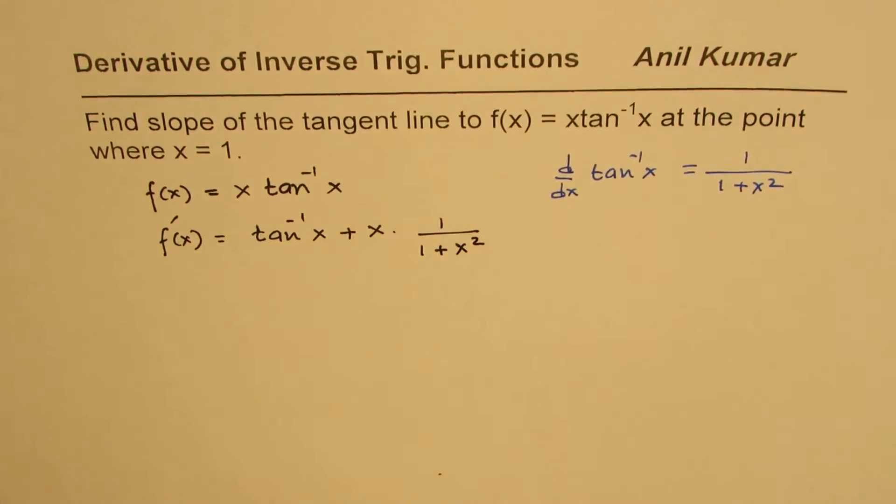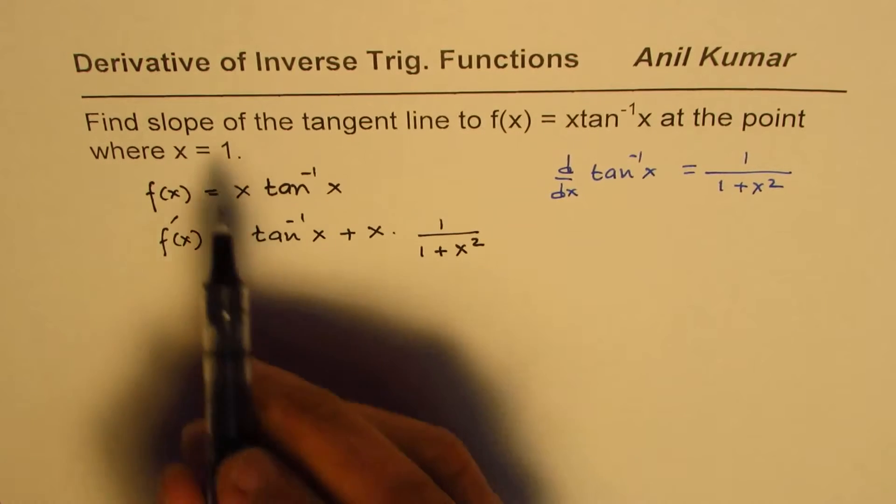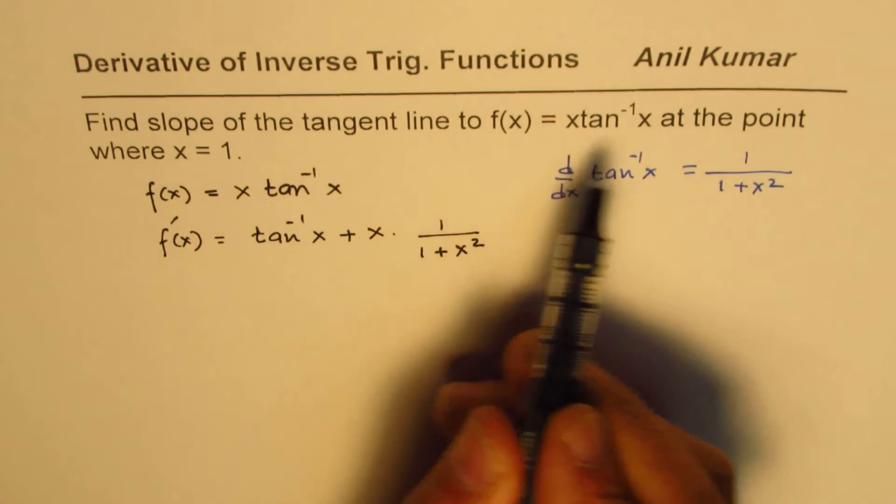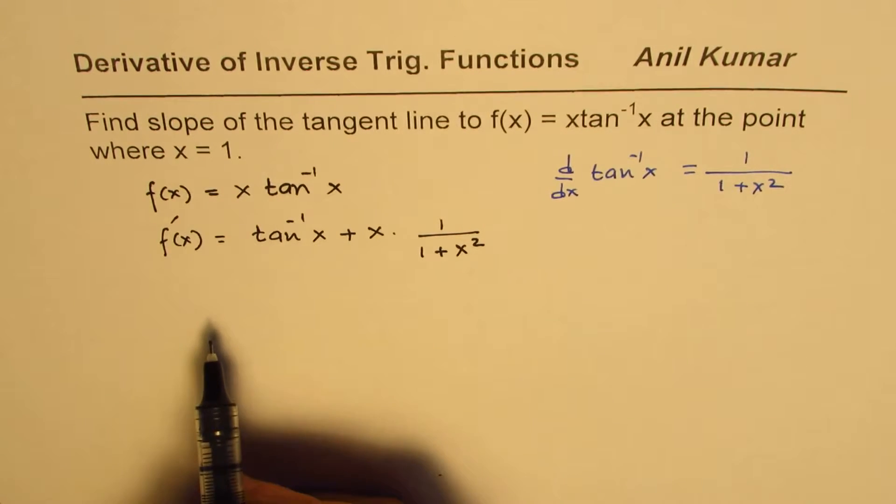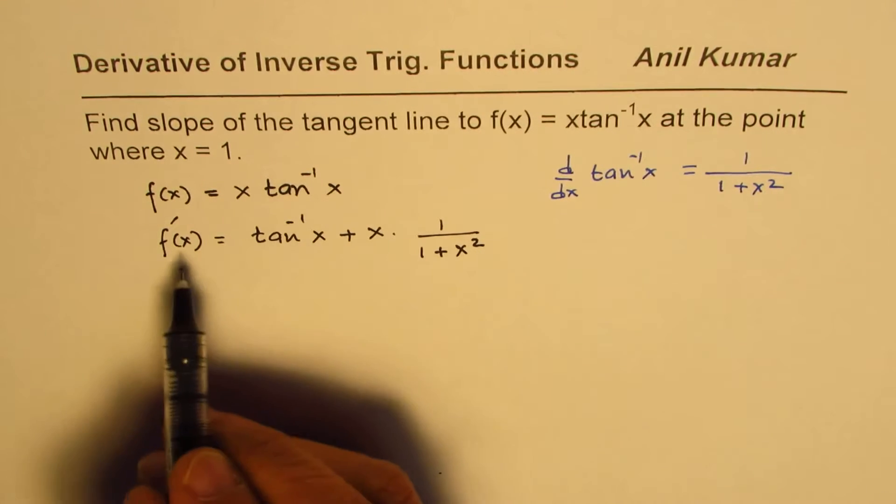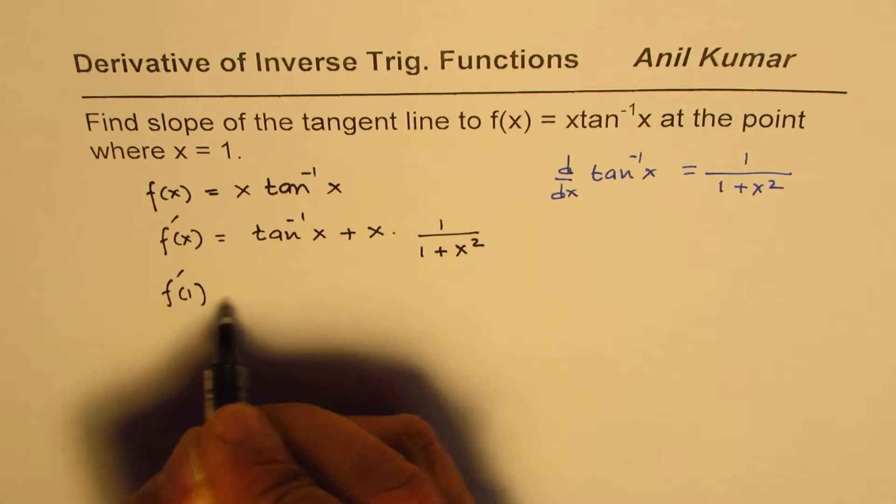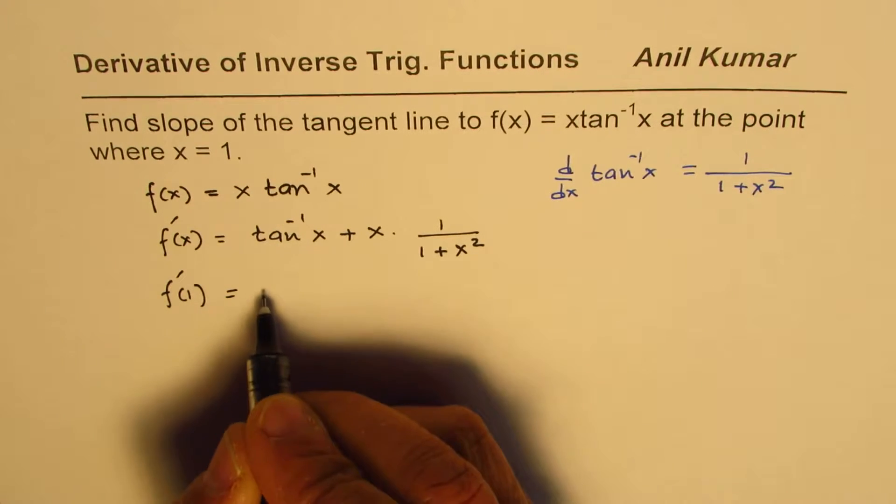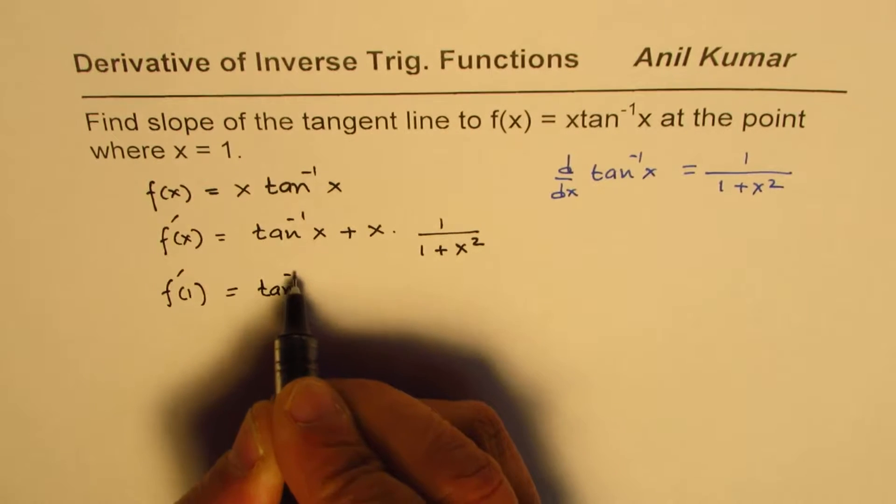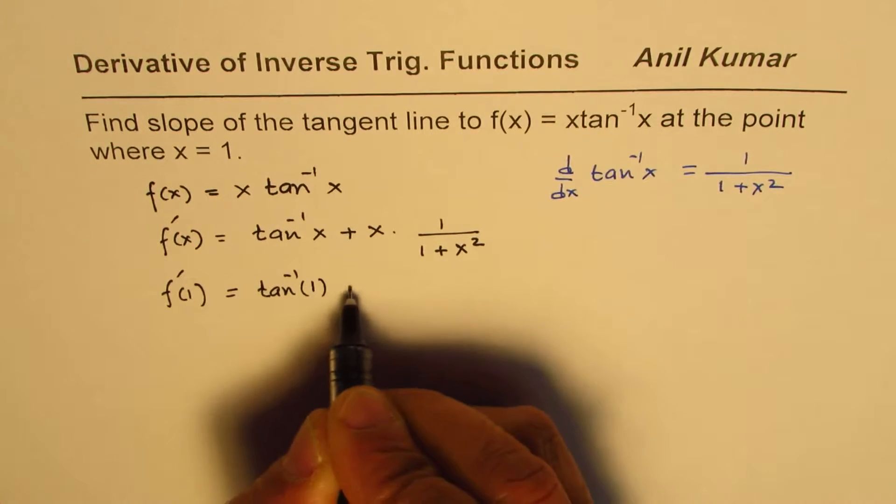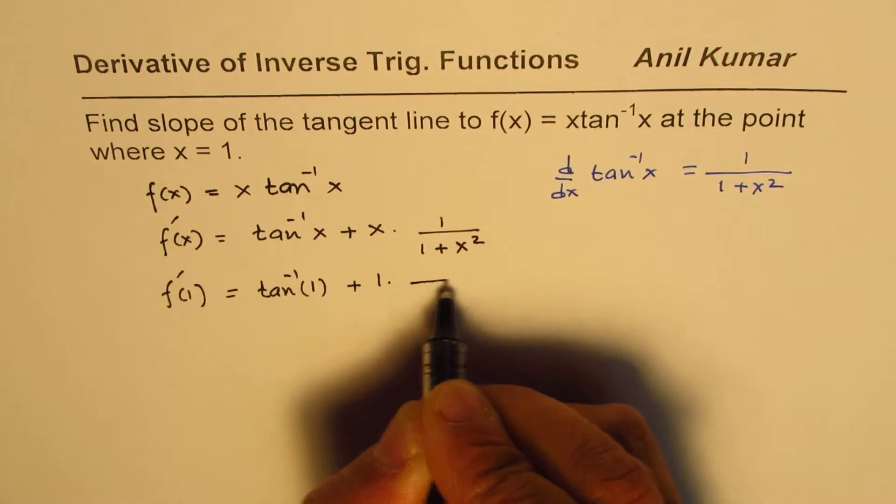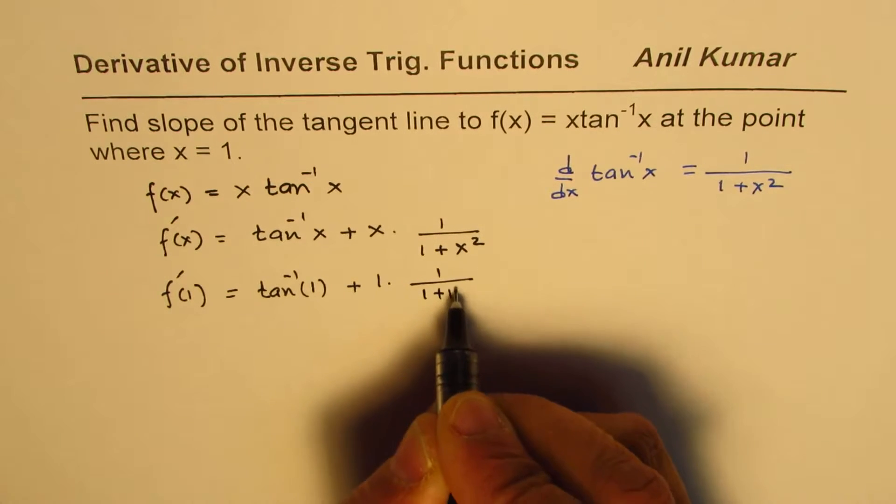Now, we need to find the slope of tangent line at x = 1. So in this formula, I can substitute 1 here. The slope at x = 1 we can write as tan⁻¹(1) plus 1 times 1/(1 + 1²).